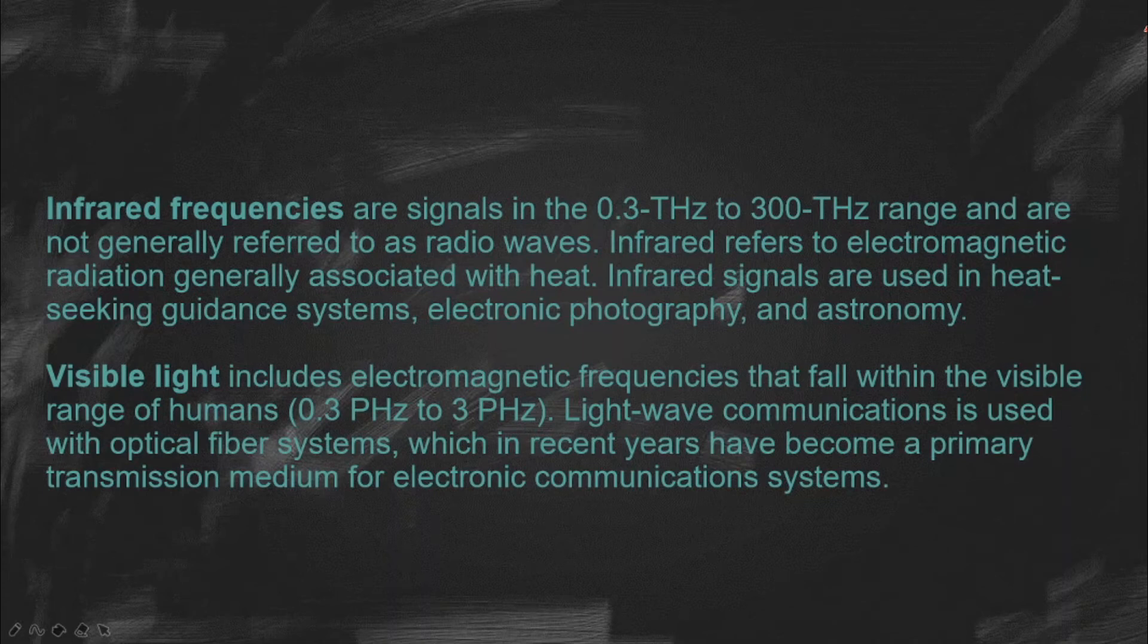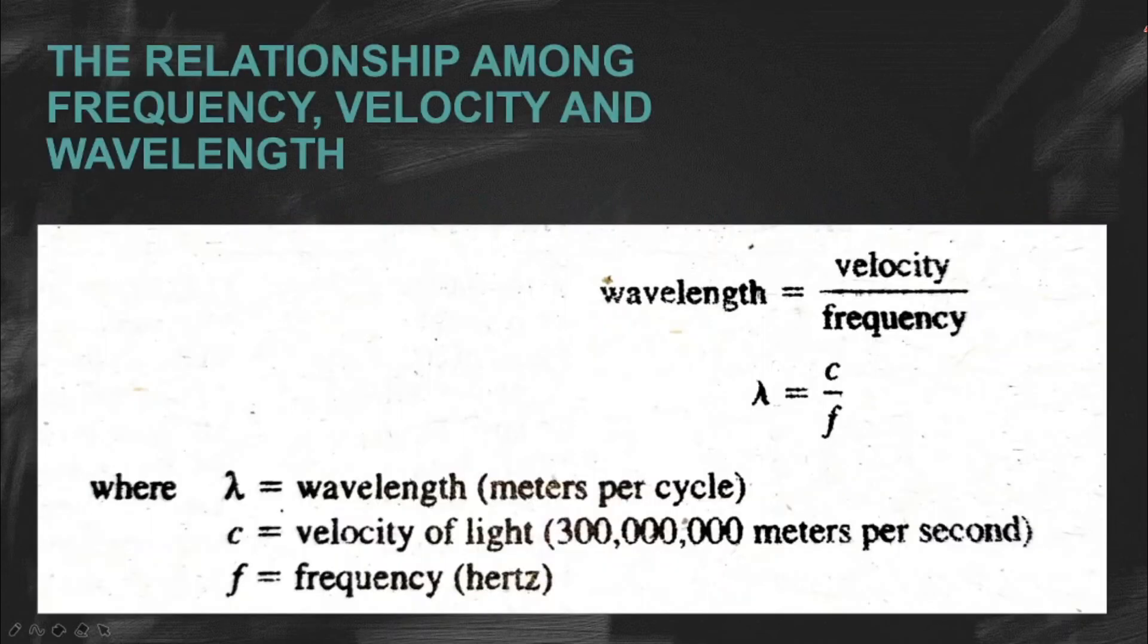Next, we have the visible light. A visible light includes electromagnetic frequencies that fall within the visible range of humans, ito yung nakikita na with the human eye, which is ang frequency nito ay nag-range from 0.3 GHz to 3 GHz. Light wave communications is used with optical fiber systems which in recent years have become a primary transmission medium for electronic communication systems.